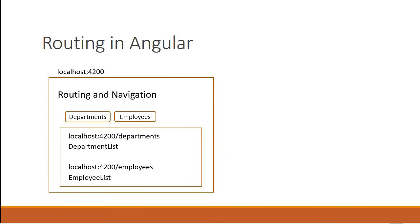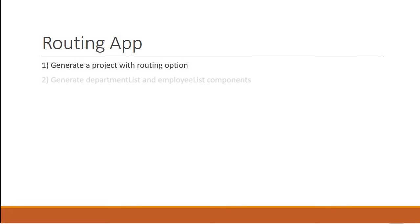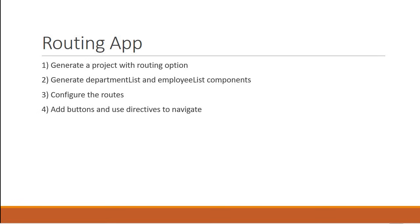To implement this requirement, here are the steps. First, we generate a new project using Angular CLI with the routing option. Second, we generate the department list component and employee list component. Third, we configure the routes for our application, which will allow us to navigate to the routes from the URL. Fourth, we add buttons and use directives to navigate to the configured routes.